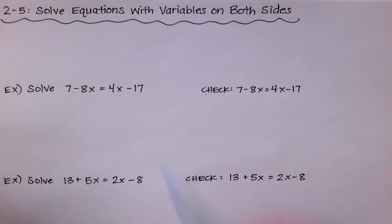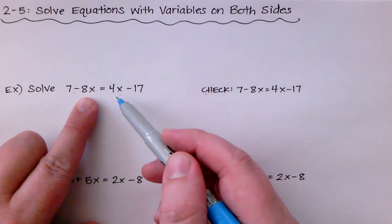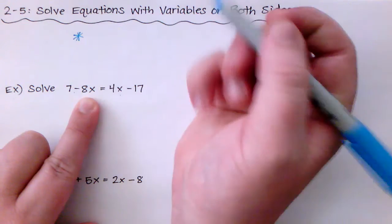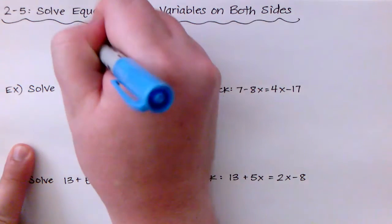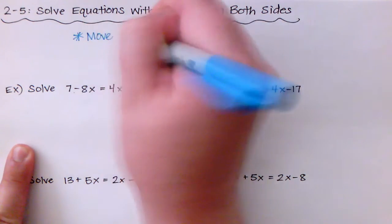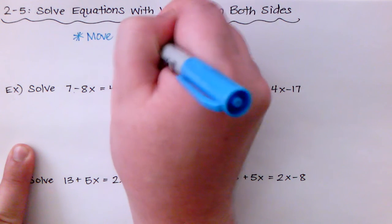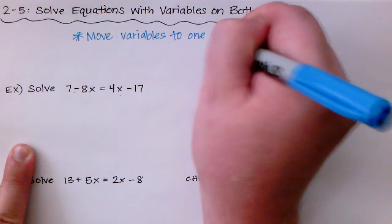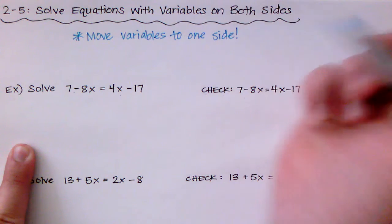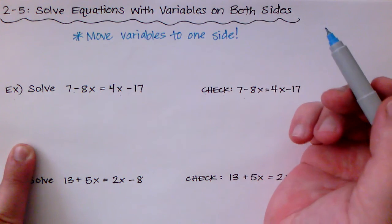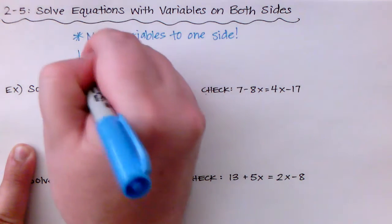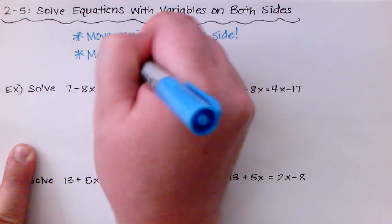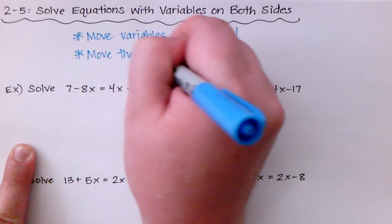So there's, as you can see in this example, variables on both sides. Before we begin I want to give you some tips. The first tip is to move the variables to one side. You can pick if you want to move the variables to the left side or to the right side, it's completely up to you. But once you've done that, then you need to move those constants or the lonely numbers to the other side.